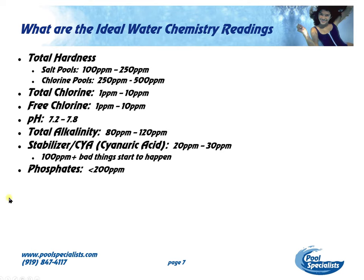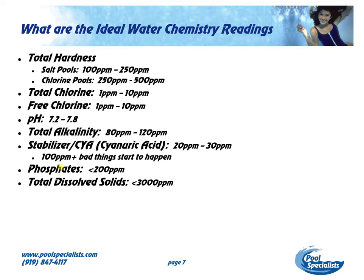Phosphates — the ideal level is less than 200. This is more of an issue if you have a salt system than a regular chlorine pool. A lot of the phosphates are orthophosphates and they come in through your fill water — the community or city water actually adds orthophosphates because they help keep the pipes clean, not only the supply pipes to your house but also the sewage pipes. Total dissolved solids — you really want less than 3,000 parts per million. As you start getting above 3,000, your chemical usage goes up because the water is kind of full, and water is a universal solvent.